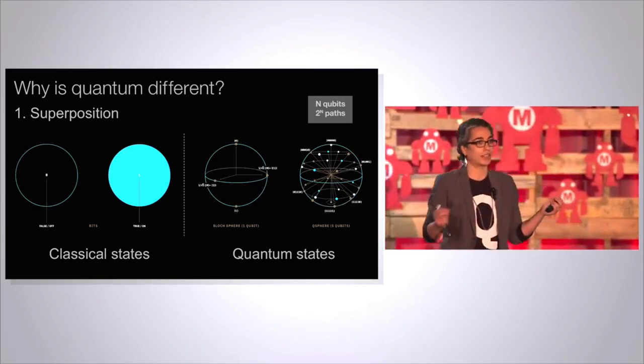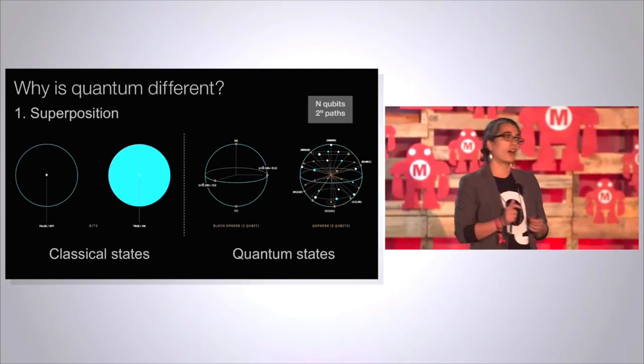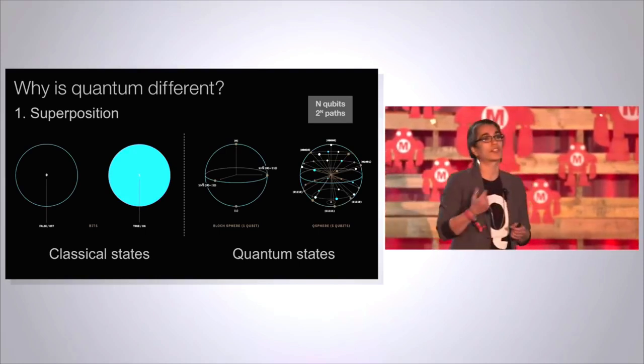So not just zero, not just one, but a superposition of zero and one. And you can also have complex superpositions of zero and one. So you start to be able to explore a much richer set of states.